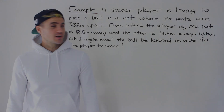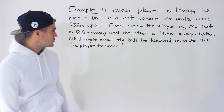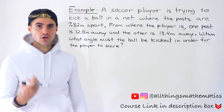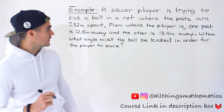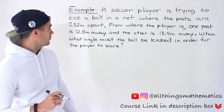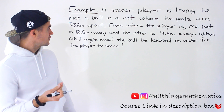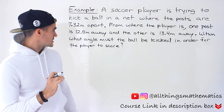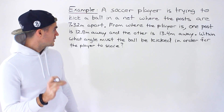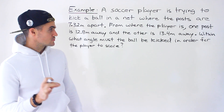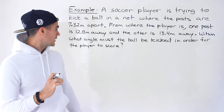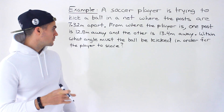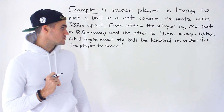Welcome back everyone, Patrick here. Moving on to the next example: a soccer player is trying to kick a ball into a net where the posts are 7.32 meters apart. From where the player is, one post is 12.8 meters away and the other is 13.4 meters away. Within what angle must the ball be kicked in order for the player to score?